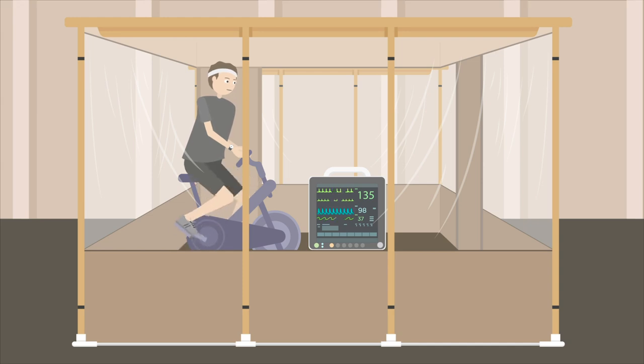Oxygen consumption, ventilation, oximetry, and heart rate were measured throughout the study. Measurements were taken during five minutes of resting and during four three-minute stages of exercise at 25%, 50%, 75%, and 100% of age-predicted heart rate reserve.